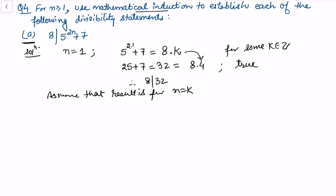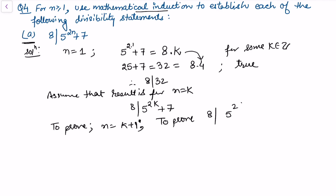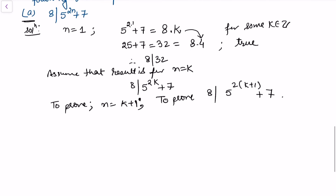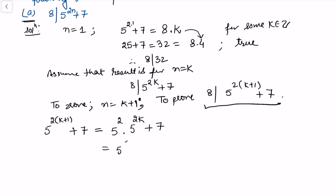Inductive step for part a: assume 8 divides 5^(2k) + 7 for n=k. We need to prove 8 divides 5^(2(k+1)) + 7. Starting from the left side, 5^(2k+2) + 7 = 5²·5^(2k) + 7, and we expand this expression.